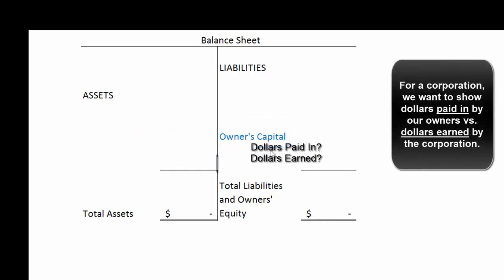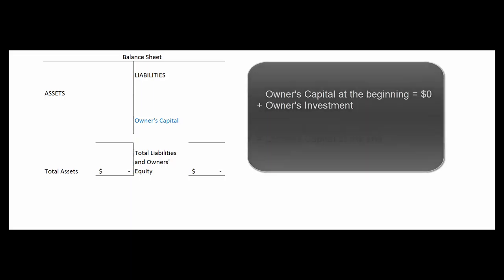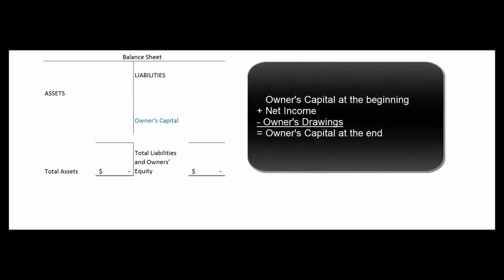With a corporation, we're going to expand that to make it more apparent exactly what our sources of capital are. Remember, when we first open a sole proprietorship there's no money in it, so the owner makes an initial investment. Then owner's capital at the beginning, plus income, minus owner's drawings gives us owner's capital at the end.